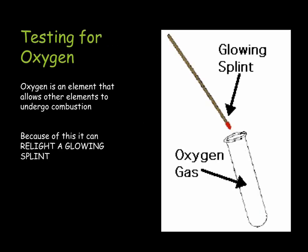The second gas we need to be able to test for is oxygen. Oxygen is an element that allows other elements to undergo combustion — it is a highly reactive element. Because of this, it can relight a glowing splint. To test it, we put a glowing splint inside the gas, and if it relights, oxygen is present.